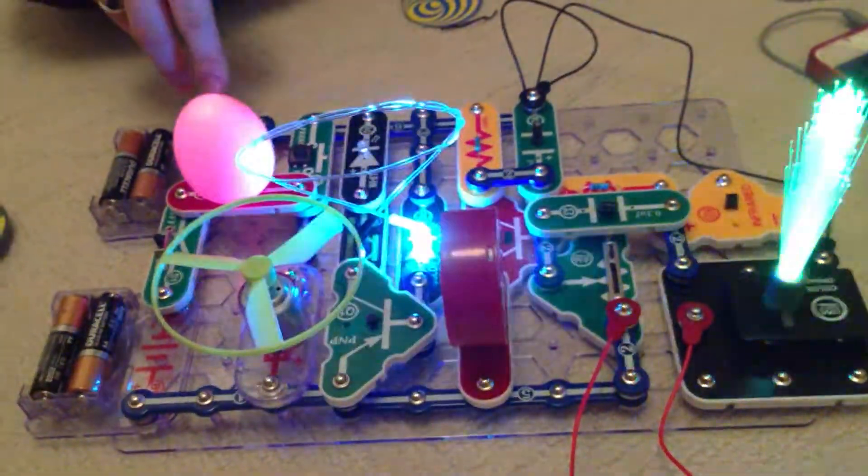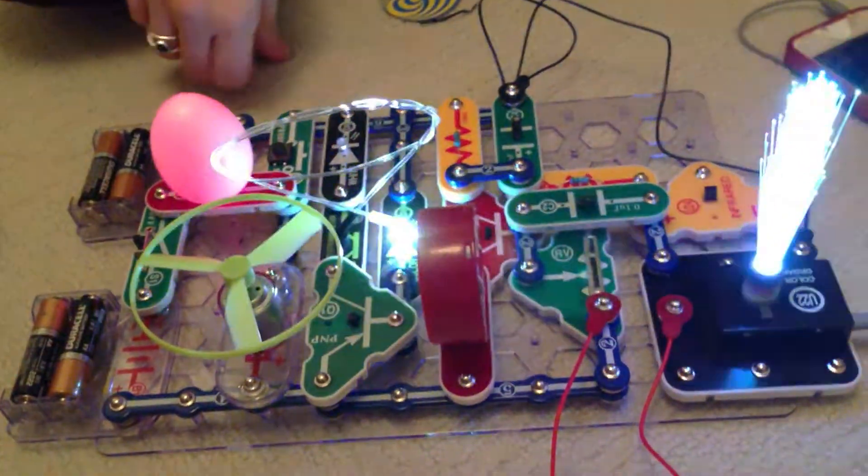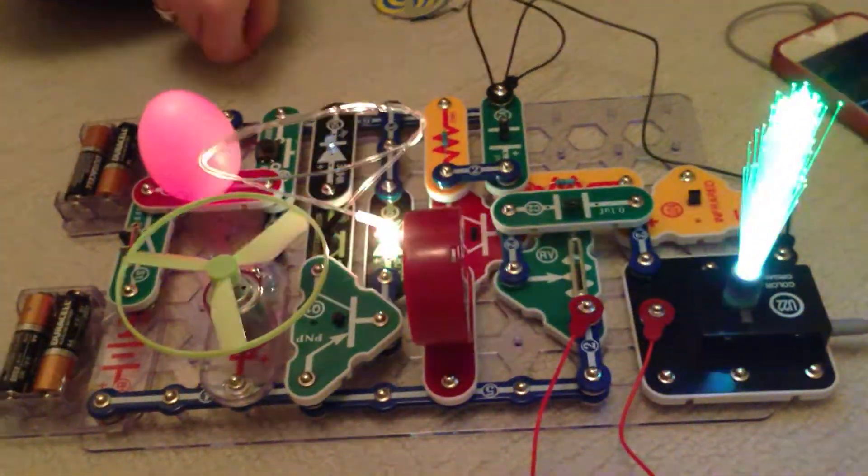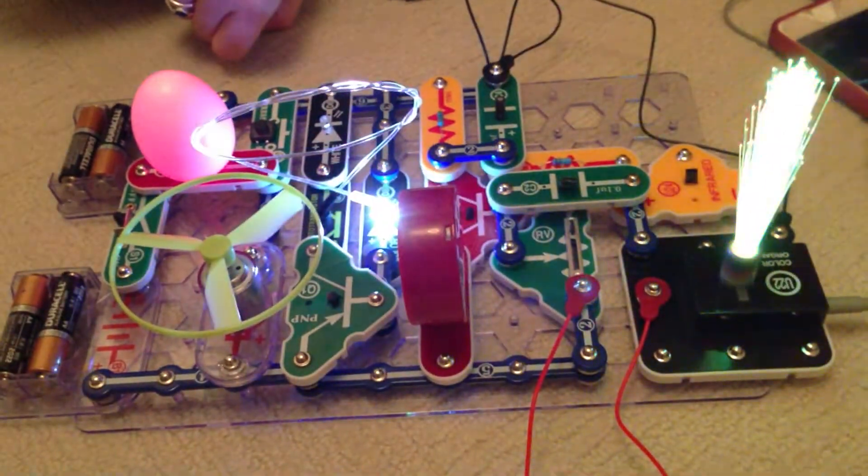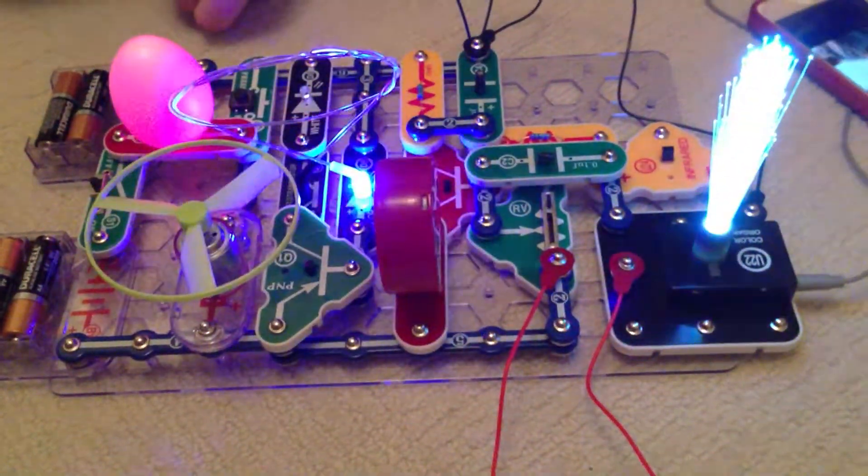So this is the new Snap Circuits set. The light set comes with instructions for over 175 projects and there are 55 parts in the box. A very satisfying kit from Snap Circuits.